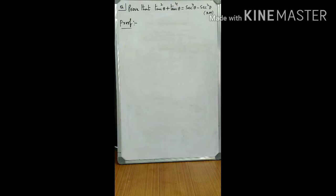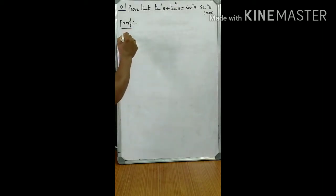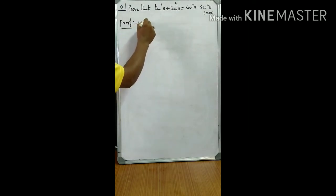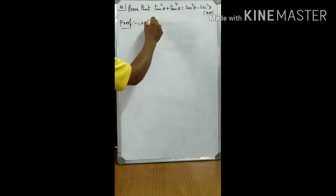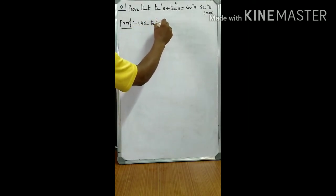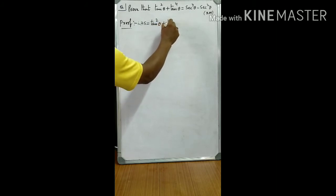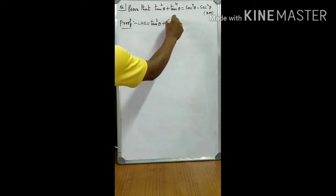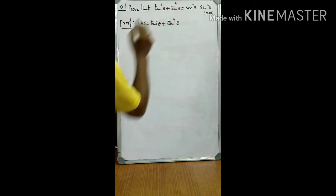How do we prove this? Let us see. Take LHS first. LHS is tan squared theta plus tan power 4 theta.